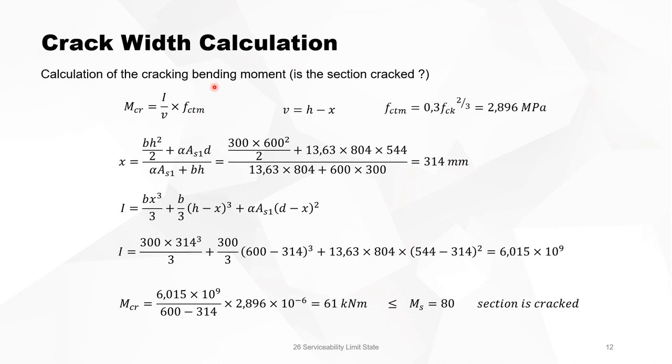We calculate the cracking bending moment. We follow the same procedure, and we see now that the cracking bending moment is also 61 kilonewton meter. The x changed a little bit and the d changed a little bit, and they compensated by accident. So it's 61 kilonewton meter for the cracking bending moment. The section is still cracked.